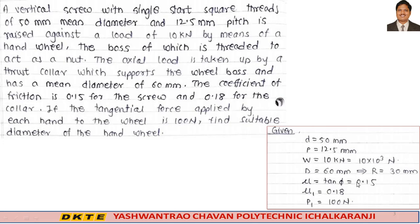The coefficient of friction is 0.15 for the screw and 0.18 for the collar. So mu for the screw and mu for the collar are given. The tangential force applied by each hand to the wheel is 100 N, and the arm length is half a meter.